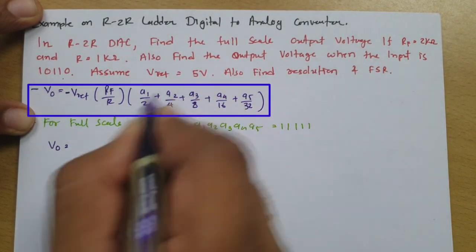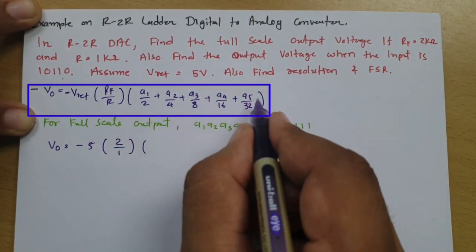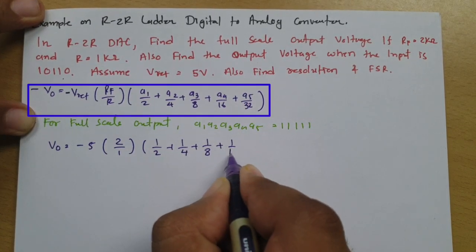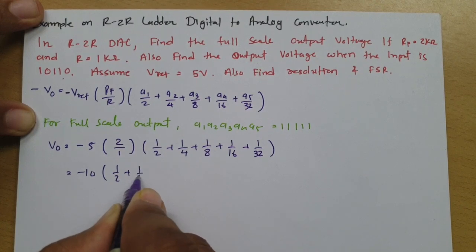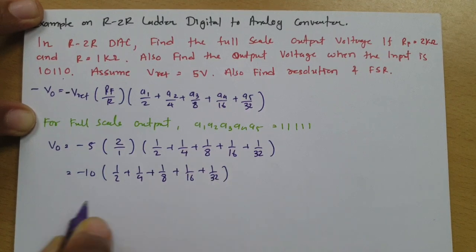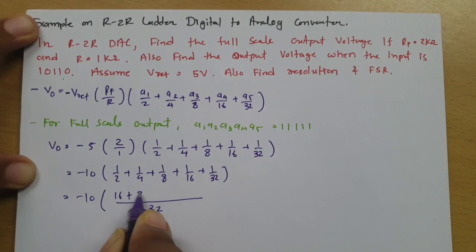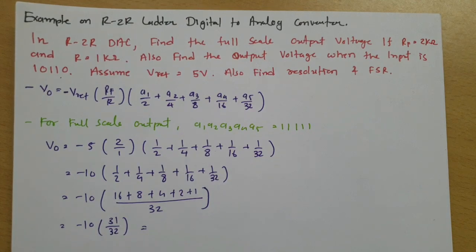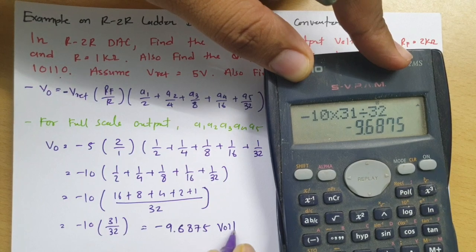V0 equals minus 5 (V_ref), RF is 2 kilo ohm and R is 1 kilo ohm, and A1, A2, A3, A4, A5 are all 1. So this becomes minus 10 into (1/2 + 1/4 + 1/8 + 1/16 + 1/32). If you take the LCM, the denominator is 32, and numerator is 16 + 8 + 4 + 2 + 1, which is technically 31/32. If you solve this, you find it is minus 9.6875 volts.